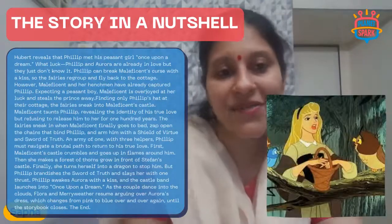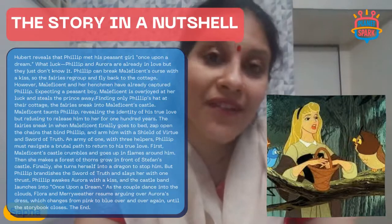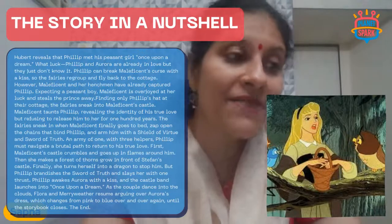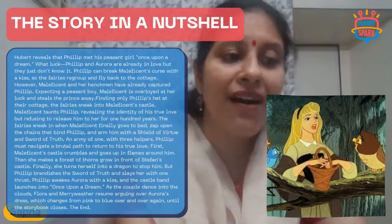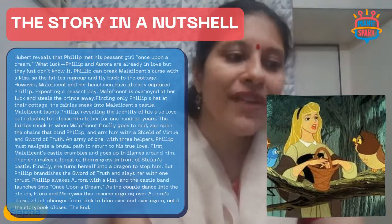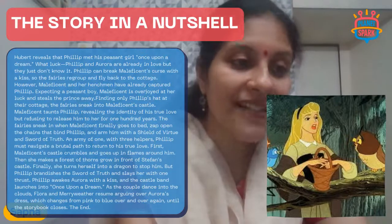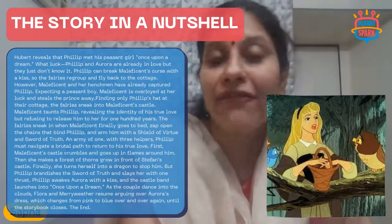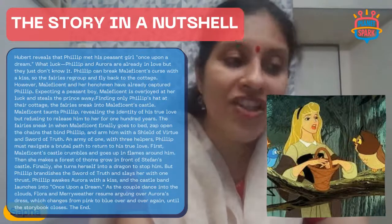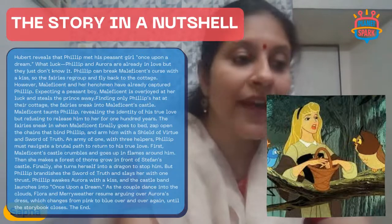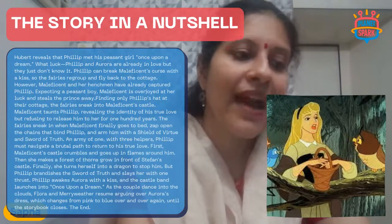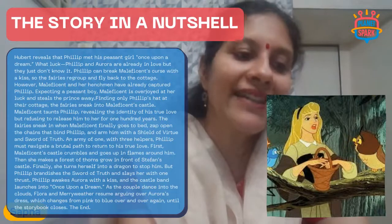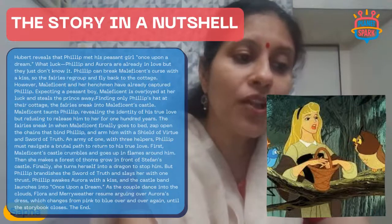All's well that ends well: King Hubert, Prince Philip's father, reveals that Philip met his peasant girl 'once upon a dream' and notes what luck it is that Philip and Aurora are already in love without knowing it. Philip can break the evil witch's curse with a kiss. The fairies regroup and fly back to the cottage — but the witch and her henchmen have already captured Philip. Expecting a peasant boy, Maleficent is overjoyed at her luck and steals the prince away. Finding only Philip's hat, the fairies sneak into the evil witch's castle.